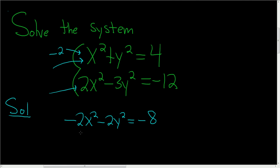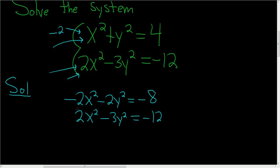And then here, below it, we're going to write this equation. So 2x squared minus 3y squared equals negative 12. So all we did was multiply the first equation by negative 2, and then we wrote the second one right underneath. Now what we'll do is add.